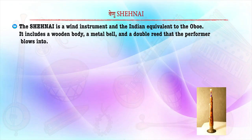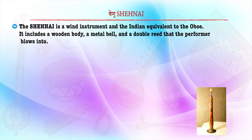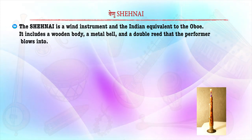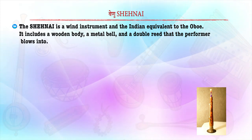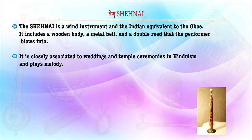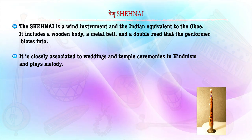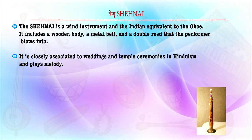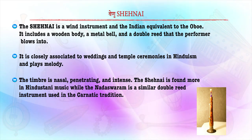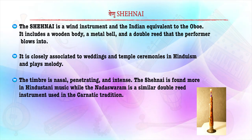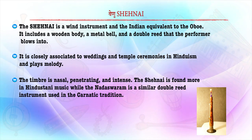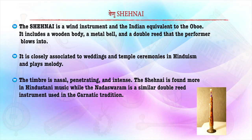Then we have Venu, also known as Shehnai. The Shehnai is a wind instrument that includes a wooden body, a metal bell and a double reed that the performer blows into. It is closely associated with wedding ceremonies and temple activities in Hinduism. Its timbre is nasal, penetrating and intense. The Shehnai is found more in Hindustani music, whereas Natvaram is a similar double reed instrument used in the Karnatic tradition.